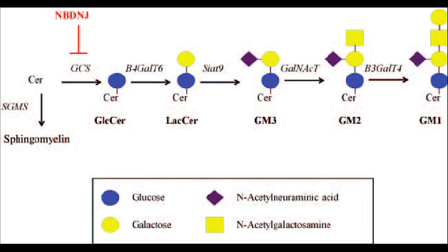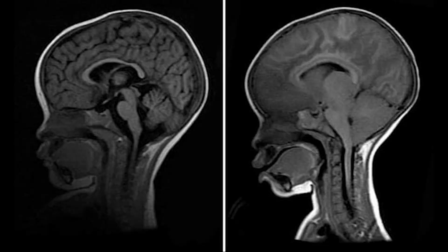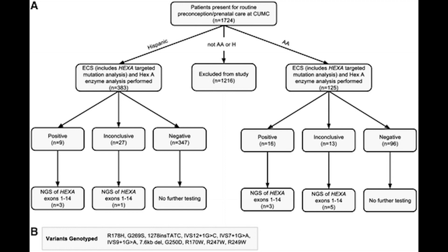Treatment of the late-onset form of Tay-Sachs with a ganglioside synthesis inhibitor shows promise. The effectiveness of this and other treatments on individuals with the infantile form of the disease is extremely limited, since the extent of neurological damage prior to birth is unknown. The difficulty in reversing such damage will make it hard to develop an effective treatment for the infantile form of the disease. It is hoped, however, that the latter-onset forms of Tay-Sachs may prove responsive to treatment, and such treatment combined with the DNA and enzymatic screening programs currently in use will lead to the eventual control of this disease.